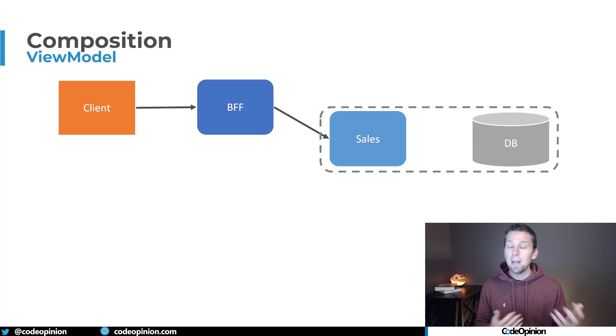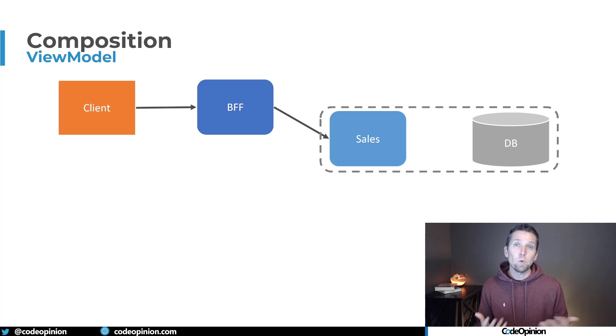How would you sort by price? We can sort, page, or filter by anything because the sales service has all the data we need. It's important to understand the pitfalls — check out my other videos on event carried state transfer. The key point is you're dealing with stale data. The data ownership for, for example, the name and the image